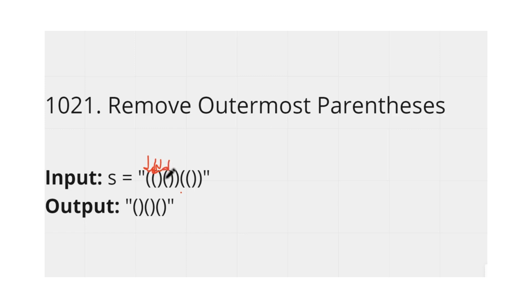Continuing, when we get another open parenthesis the counter increases to 2, and on a close it decreases back to 1, then reaches 0. When our counter becomes 0, that is the point where we split our string and we have found a valid substring. From that valid substring, we remove the first element and the last element.